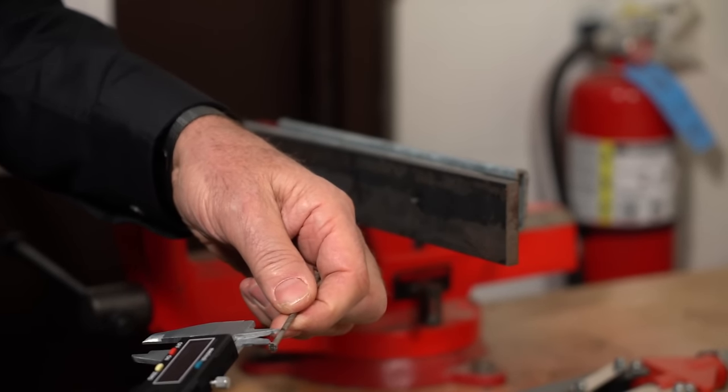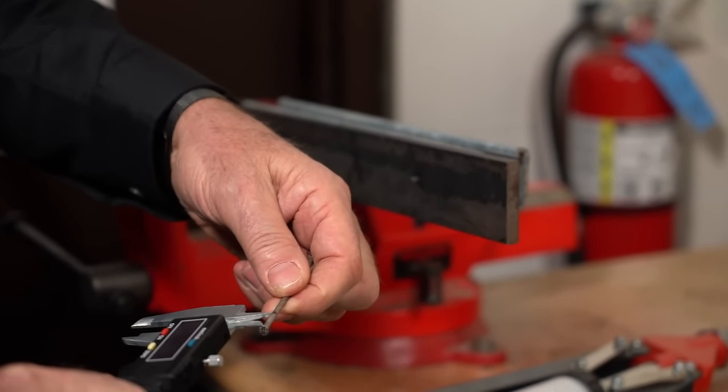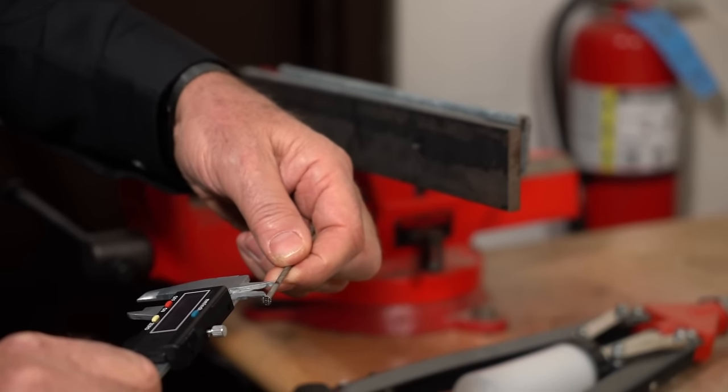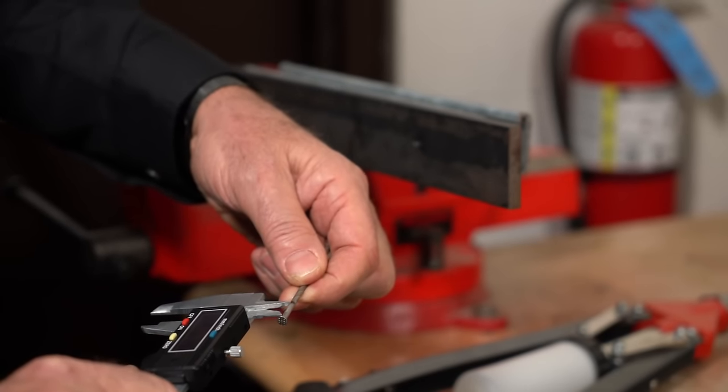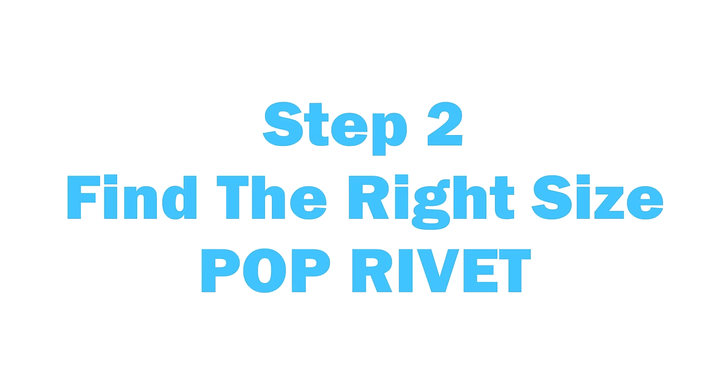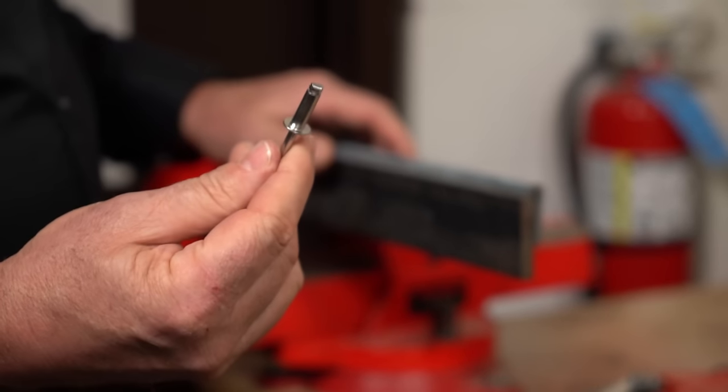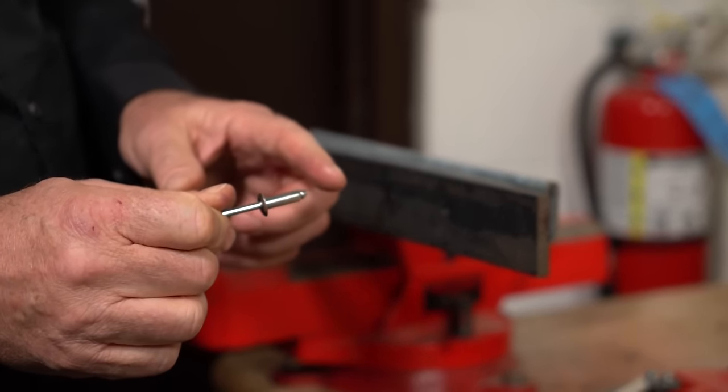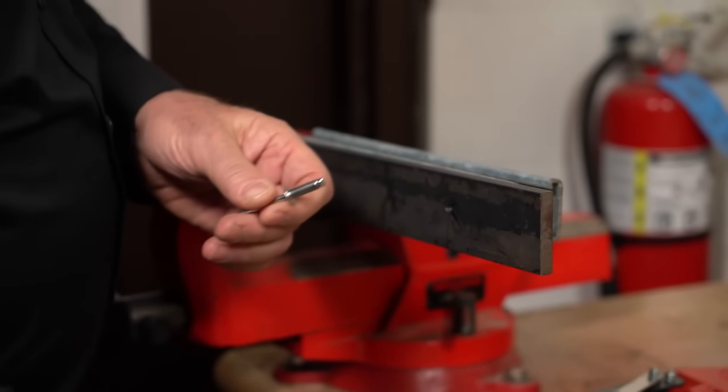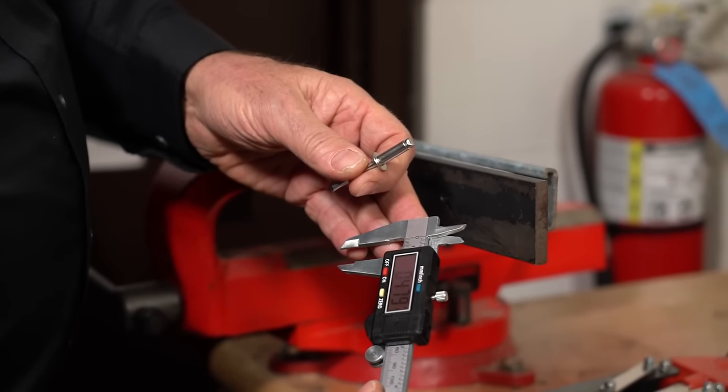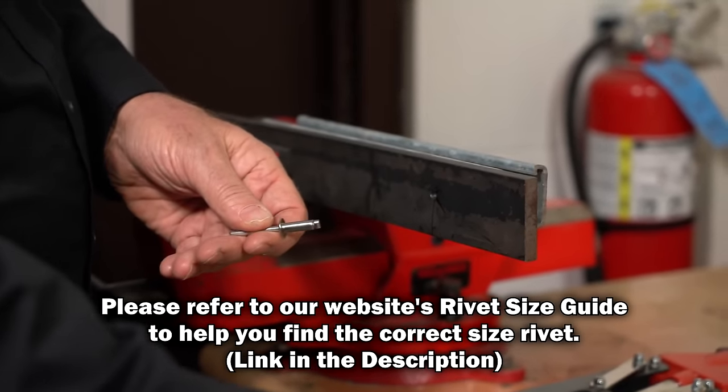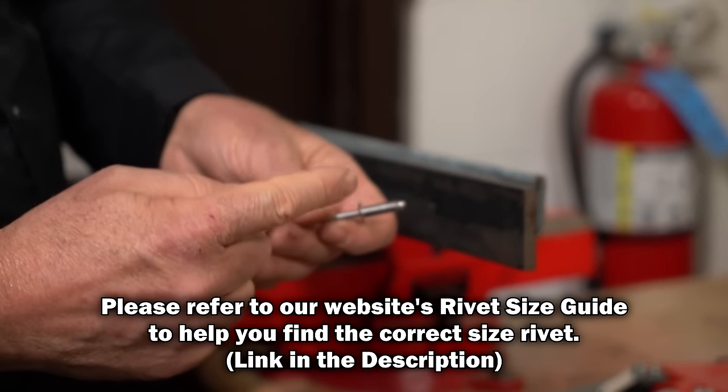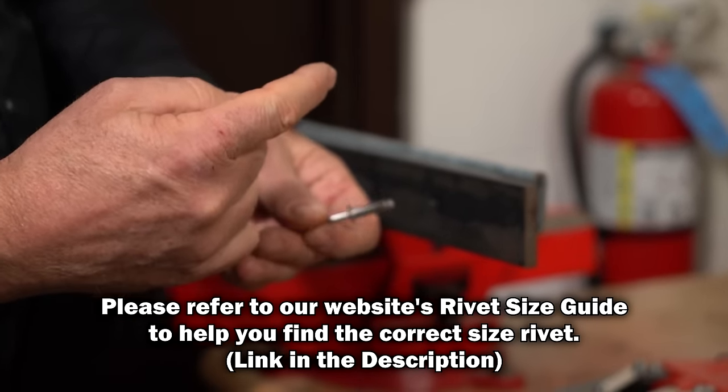You take a caliper or your tape measure and then you would measure it which just comes out to about 0.478. This is an 8.8 so this grip range is between a quarter inch and a half inch. We needed a 0.479 which falls in that range. So this rivet goes between 0.25 and 0.50.